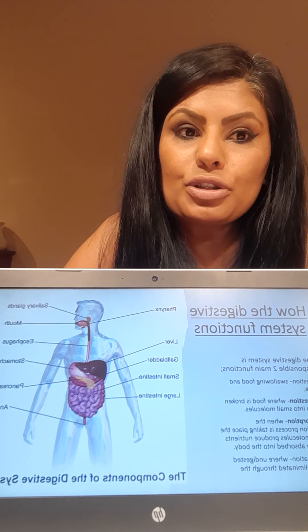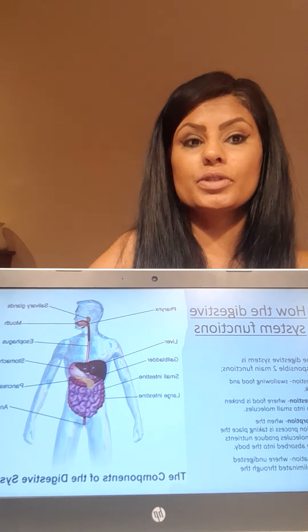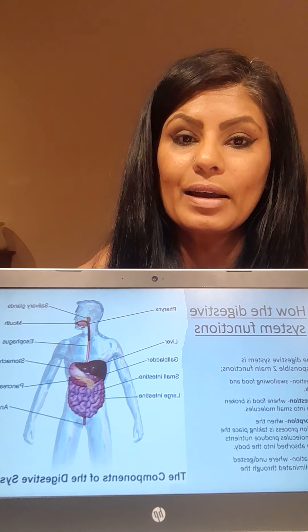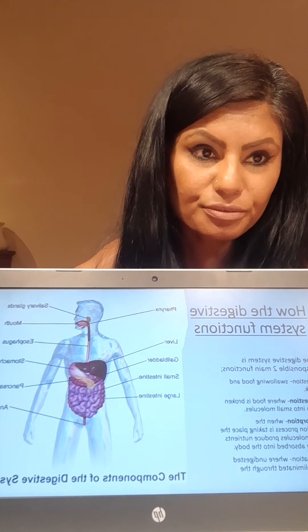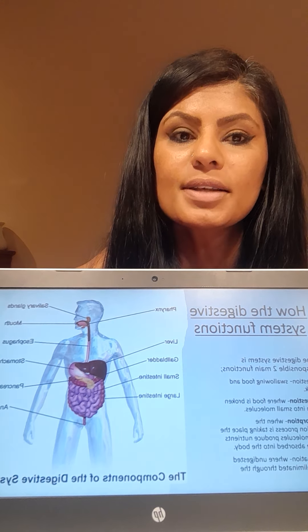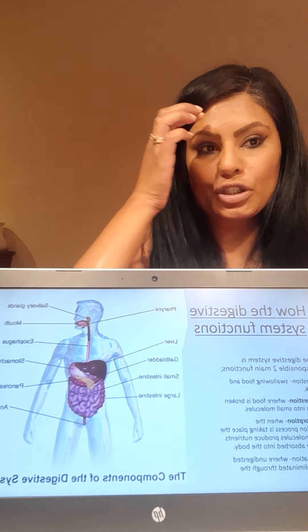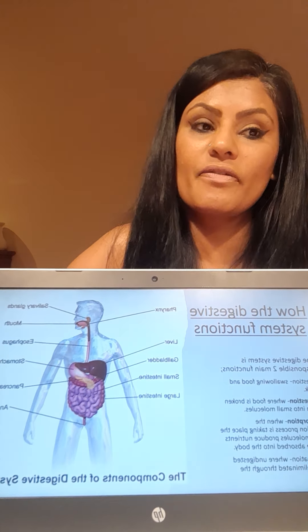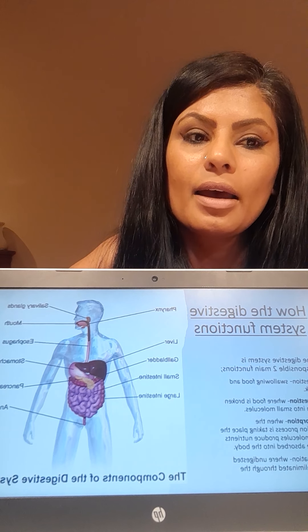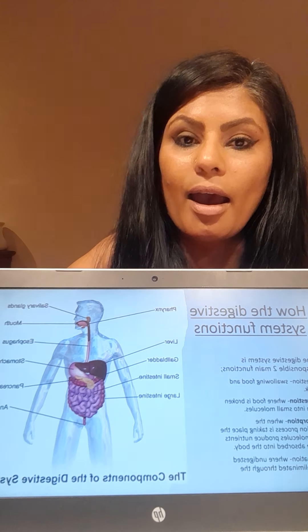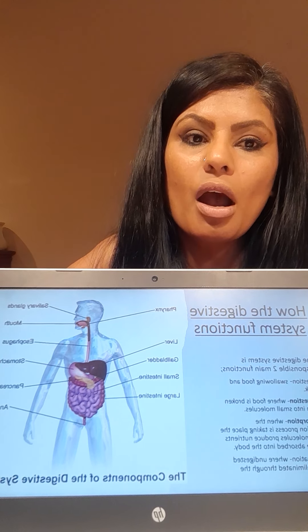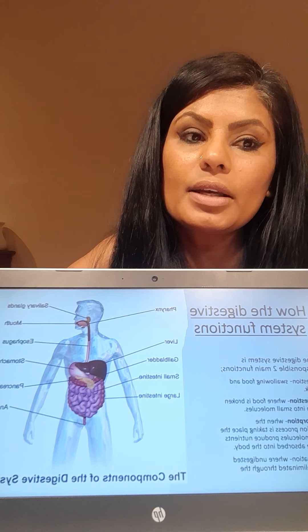The pancreas produces digestive juices that contain enzymes which help to break down carbohydrates, fats, and proteins. The pancreas sends these juices to the small intestines by way of ducts. The liver produces bile, which supports digesting fats and vitamins. Bile is moved to the gallbladder and stored until used in the small intestines. The accessory organs are the liver, pancreas, and gallbladder.